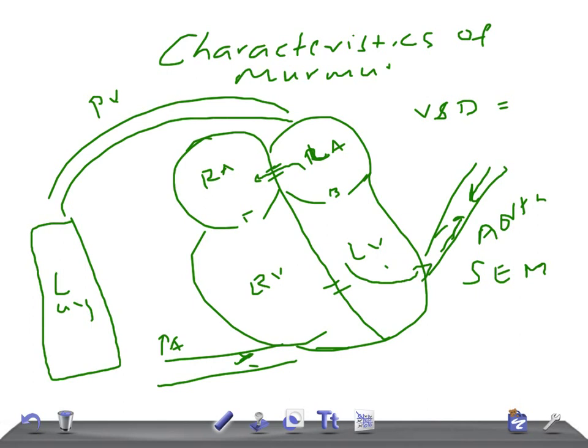PDA — patent ductus arteriosus — produces a continuous machinery murmur, also described as pansystolic, particularly in neonates. Aortic regurgitation and other types of murmurs will be discussed in another video. Thank you so much for watching, take care.